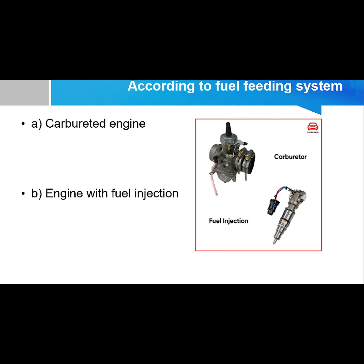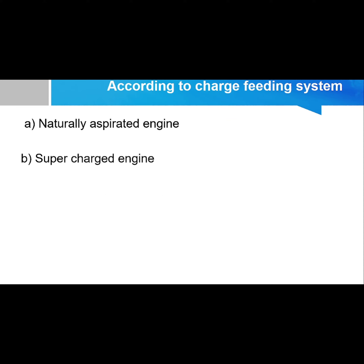Fourth, according to the fuel feeding system: types include the carbureted engine and the engine with fuel injection. Fifth, according to the charge feeding system: types include the naturally aspirated engine and the supercharged engine.